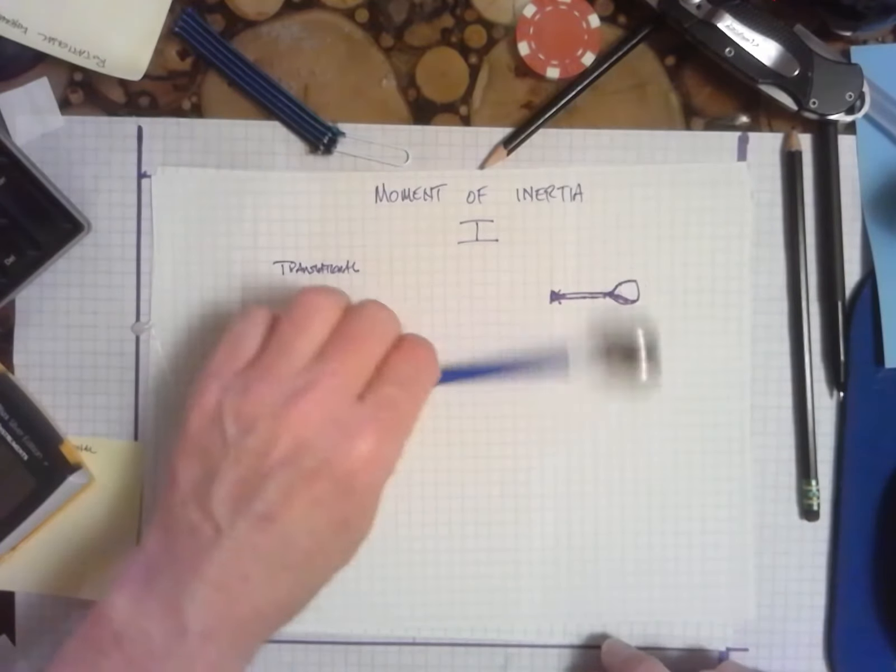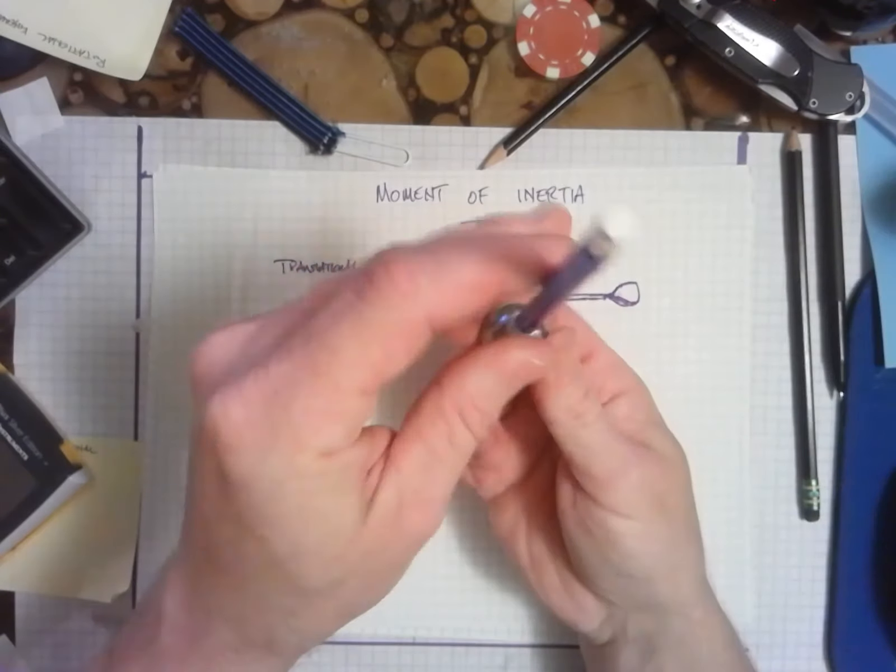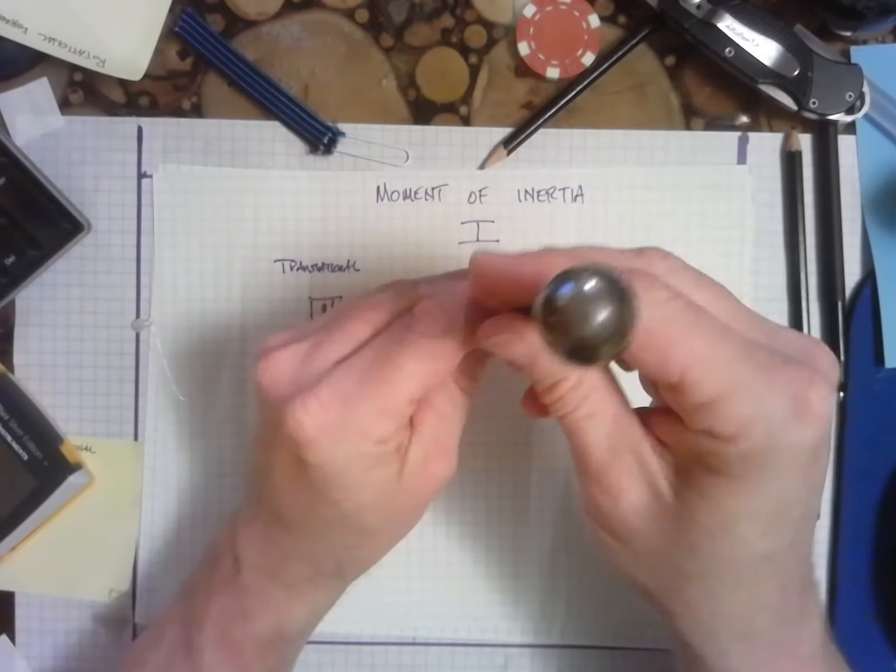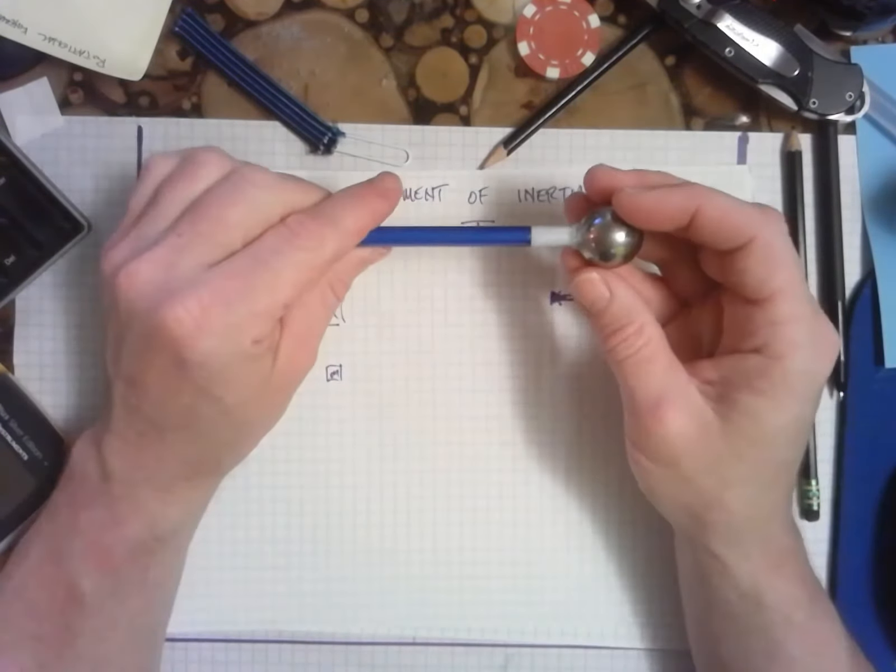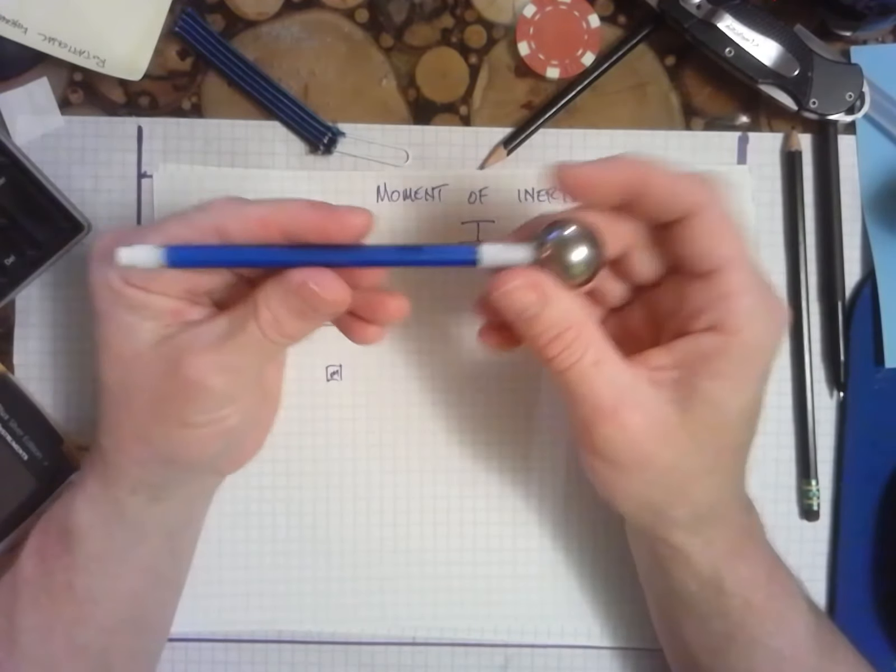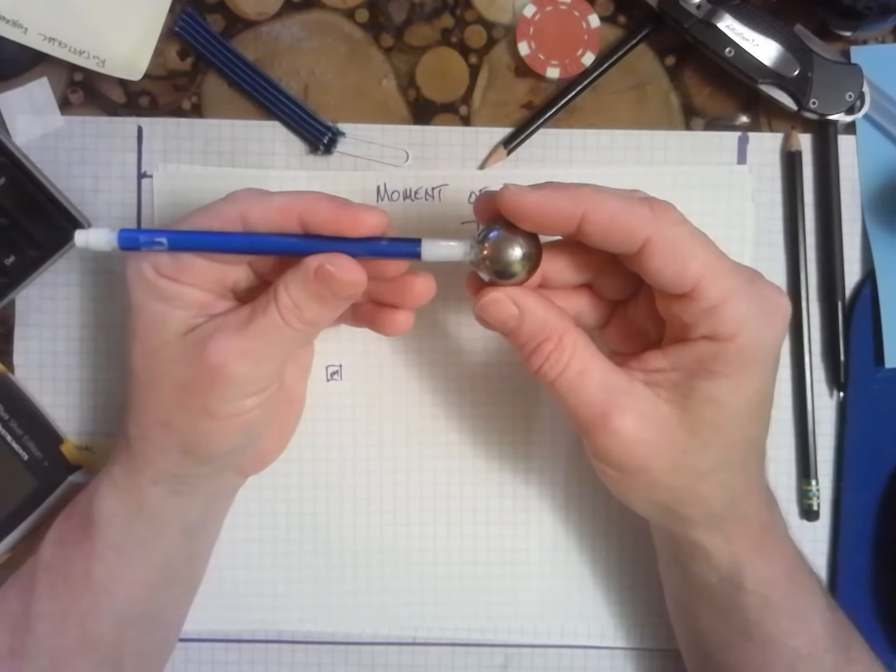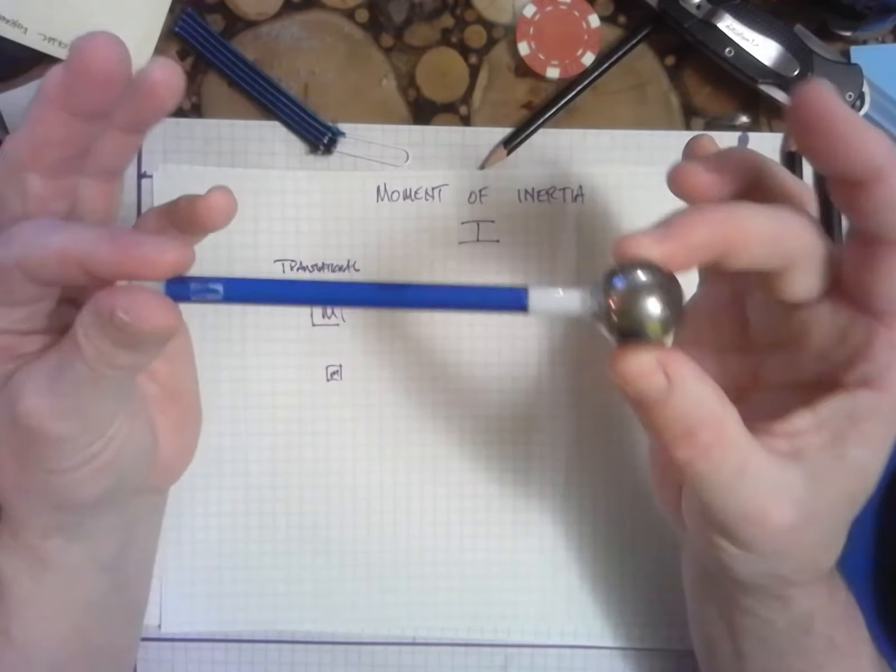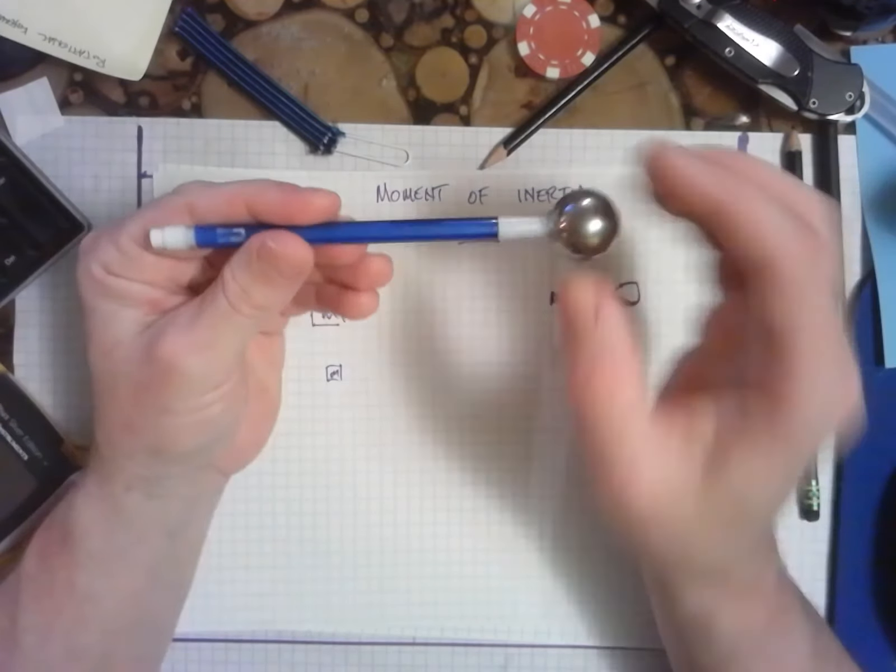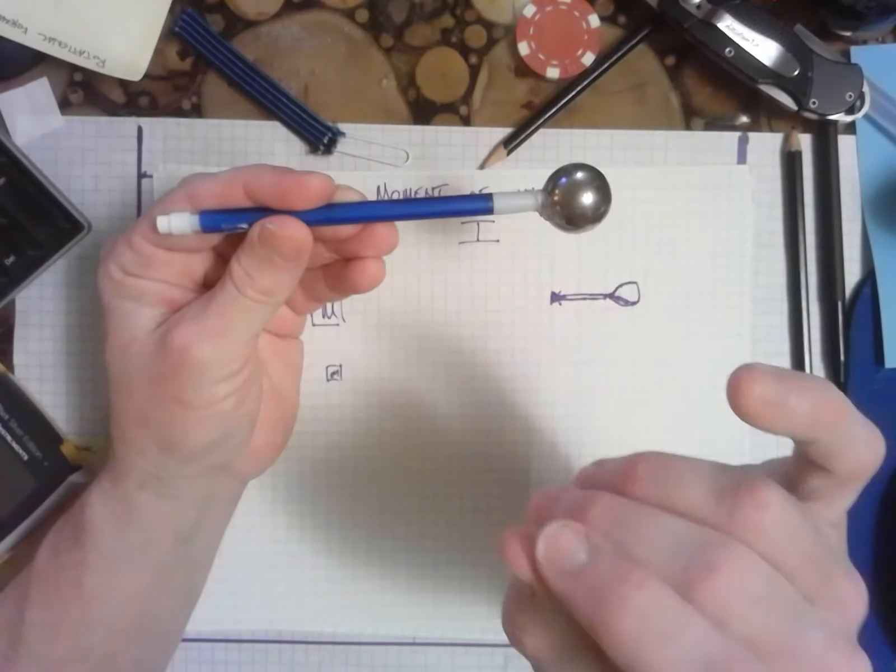We could spin it kind of close to this end, we could spin it through an axis right down through the middle there. You can even put an axis that's kind of skewed through it, but there's an infinite number of places you could put an axis. Each one would have its own value for I. It would involve the total mass of this thing, but just like torque, where the axis is makes a difference.